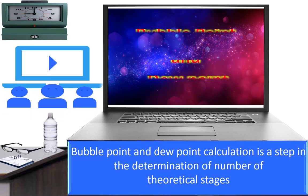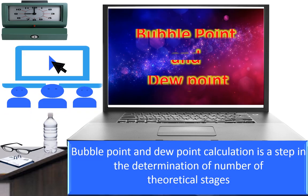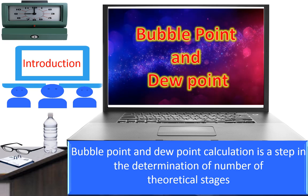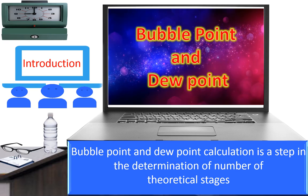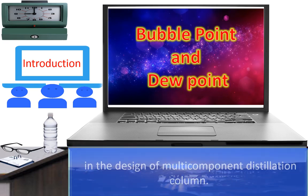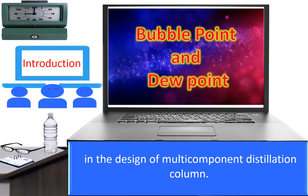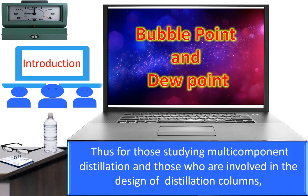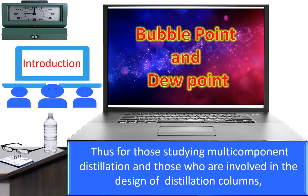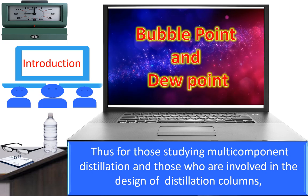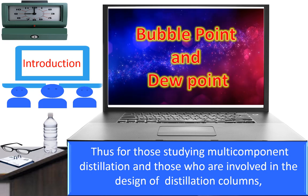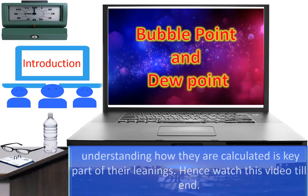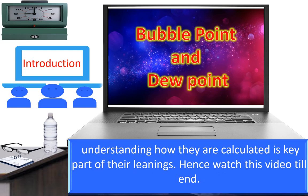Bubble Point and Dew Point calculation is a step in the determination of the number of theoretical stages in the design of a multi-component distillation column. Thus, for those studying multi-component distillation and those involved in the design of distillation columns, understanding how they are calculated is a key part of their learning.